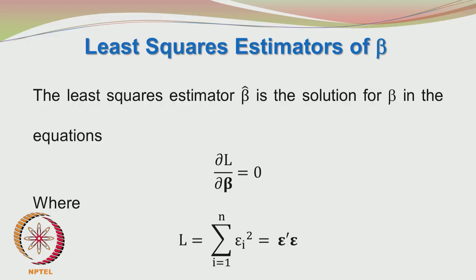The method we are going to adopt is the least squares estimation technique for the parameter set given by the beta column vector. We define a function L which is defined as Σᵢ₌₁ⁿ εᵢ². In matrix notation, εᵢ² may be written as ε'ε.